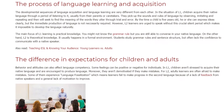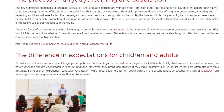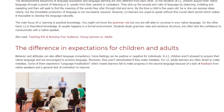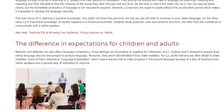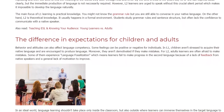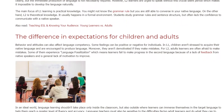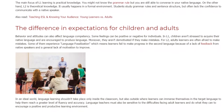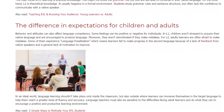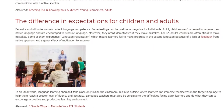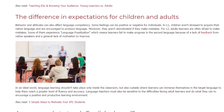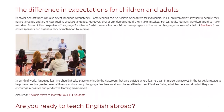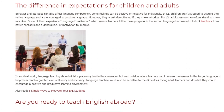The Difference in Expectations for Children and Adults. Behavior and attitudes can also affect language competency, and some feelings can be positive or negative for individuals. In L1, children aren't stressed to acquire their native language and are encouraged to produce language. Moreover, they aren't demotivated if they make mistakes. For L2, adult learners are often afraid to make mistakes. Some of them experience language fossilization, which means learners fail to make progress in the second language because of a lack of feedback from native speakers and a general lack of motivation to improve.